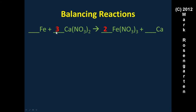Balancing the nitrate disrupts calcium and iron. We put a three in front of Ca to balance calcium, and a two in front of Fe. Final check: two irons on each side, three calciums on each side, six nitrates (three times two) on each side — everything is balanced.